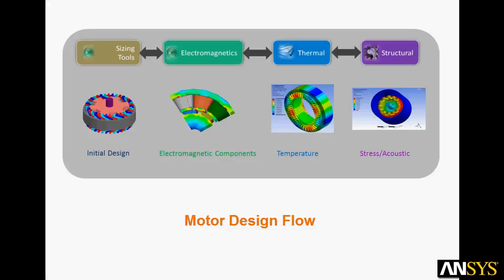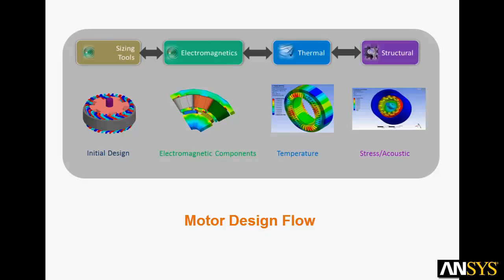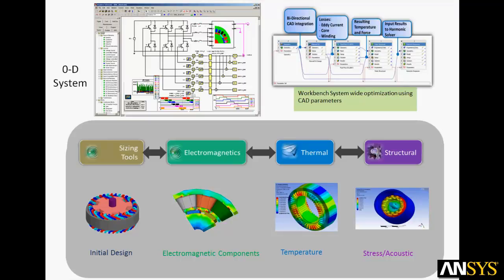ANSYS provides a complete design flow that progresses from analytical design sizing options to rigorous electromagnetics design to fully coupled electromagnetic, thermal, stress, and acoustic physics modeling. Finite element analysis of the electromagnetics is the foundation for creating physics-based models that are used with 0-D systems models. And the ANSYS workbench can be used to manage multiphysics design and perform system-wide optimization.